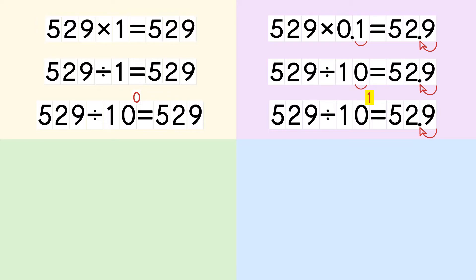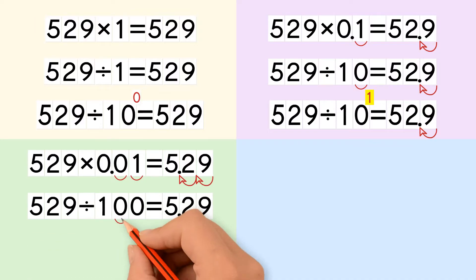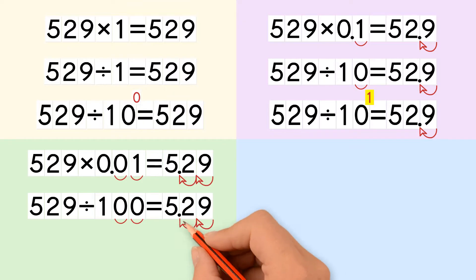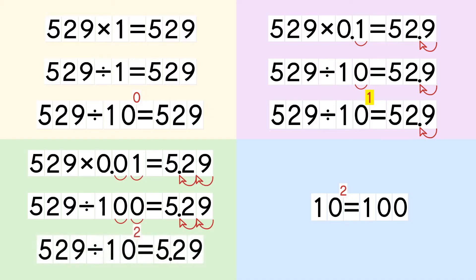When we multiply a number by 0.01, we move the decimal point 2 places to the left. Multiplying by 0.01 is the same thing as dividing by 100. When we divide a number by 100, we move the decimal point 2 places to the left. 100 equals 10 to the power of 2, so when we divide a number by 10 to the power of 2, we move the decimal point 2 places to the left.